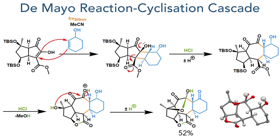This fragmentation forms the central seven-membered ring of ineleganolide. The hydrochloric acid also deprotects the two TBS groups present in the molecule and an intramolecular transesterification of the methyl ester occurs, eliminating methanol and forming a five-membered lactone. Protonation of the newly formed ketone makes it more electrophilic, and this is then attacked by the remaining hydroxyl group forming the target cyclic hemiacetal. This cascade completed the formation of all five rings required for ineleganolide in a 52% yield, and the structure was once again proven using X-ray crystallography, demonstrating that the correct stereochemistry had been formed.